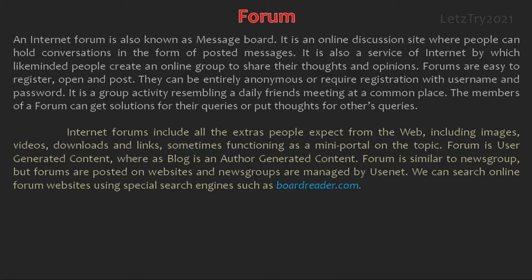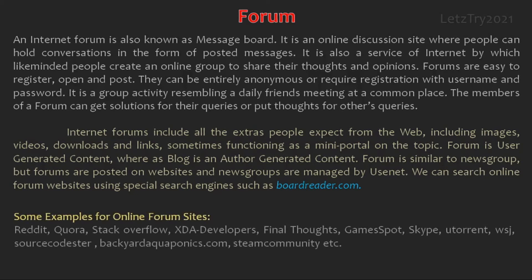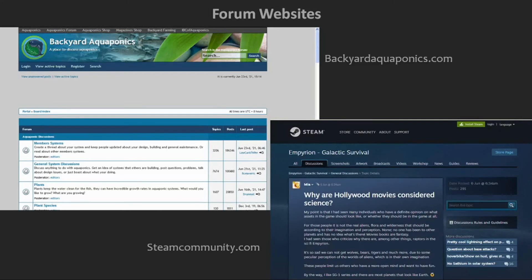Forum is user-generated content, whereas a blog is author-generated content. Forum is similar to newsgroup, but forums are posted on websites and newsgroups are managed by Usenet. We can search online forum websites using special search engines such as boardreader.com. Here are some examples of online forums. This page shows examples of two online forum websites.